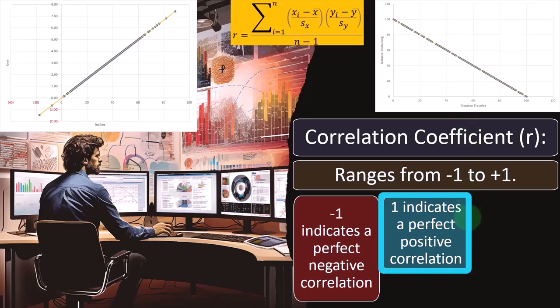So one indicates a perfect positive correlation. So now we have them going up. In this case, we're comparing feet and inches. Any kind of conversion will have a perfect positive correlation.